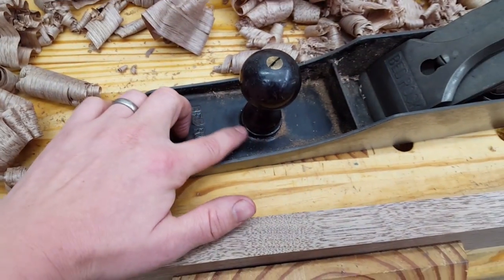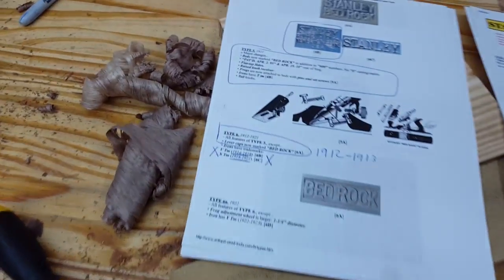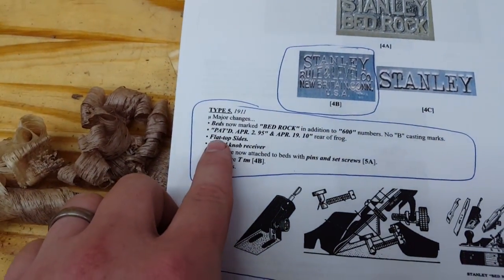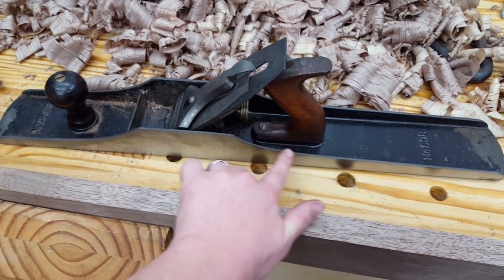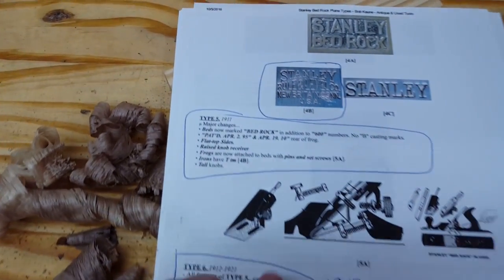Raised knob receiver. I just put it back together, but inside here the receiver is raised quite a bit. And flat top sides - these sides are flat top, they're not a complete arched shape.